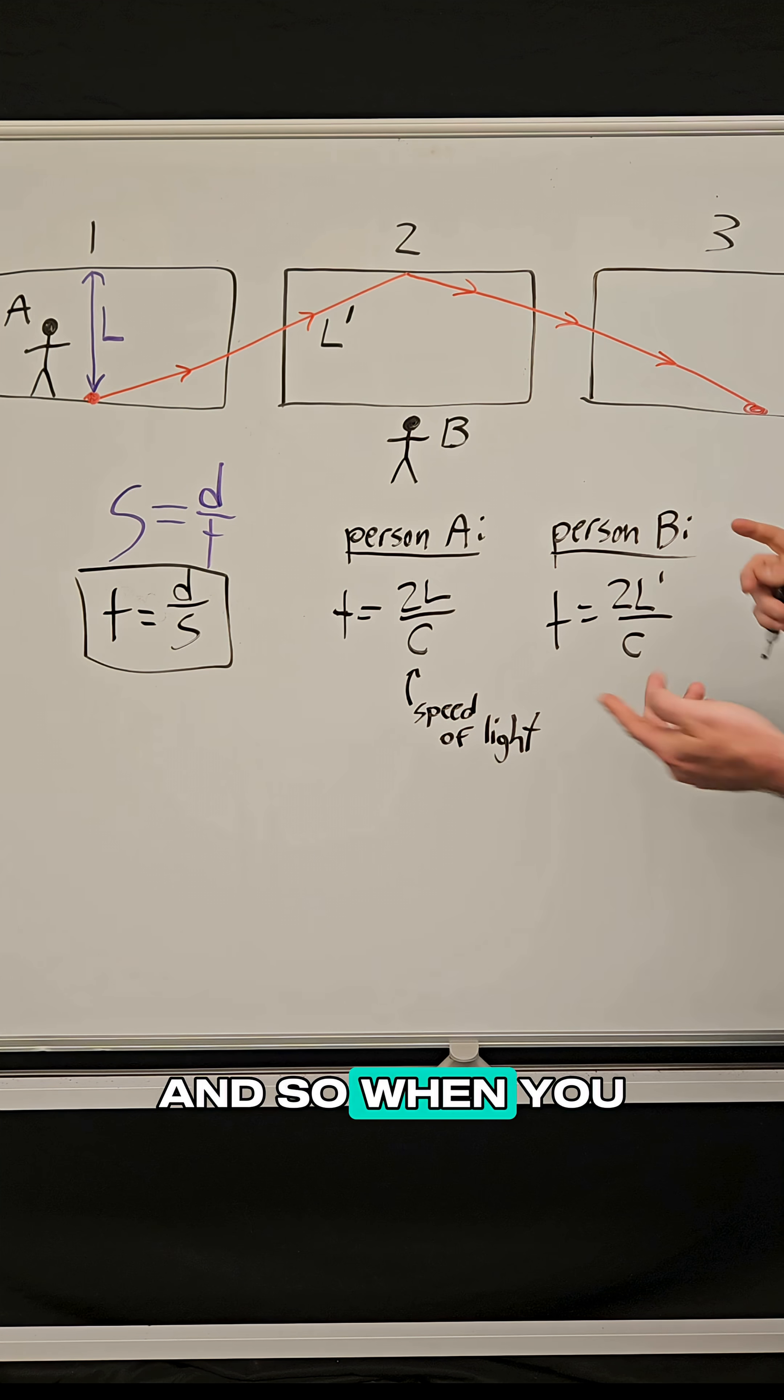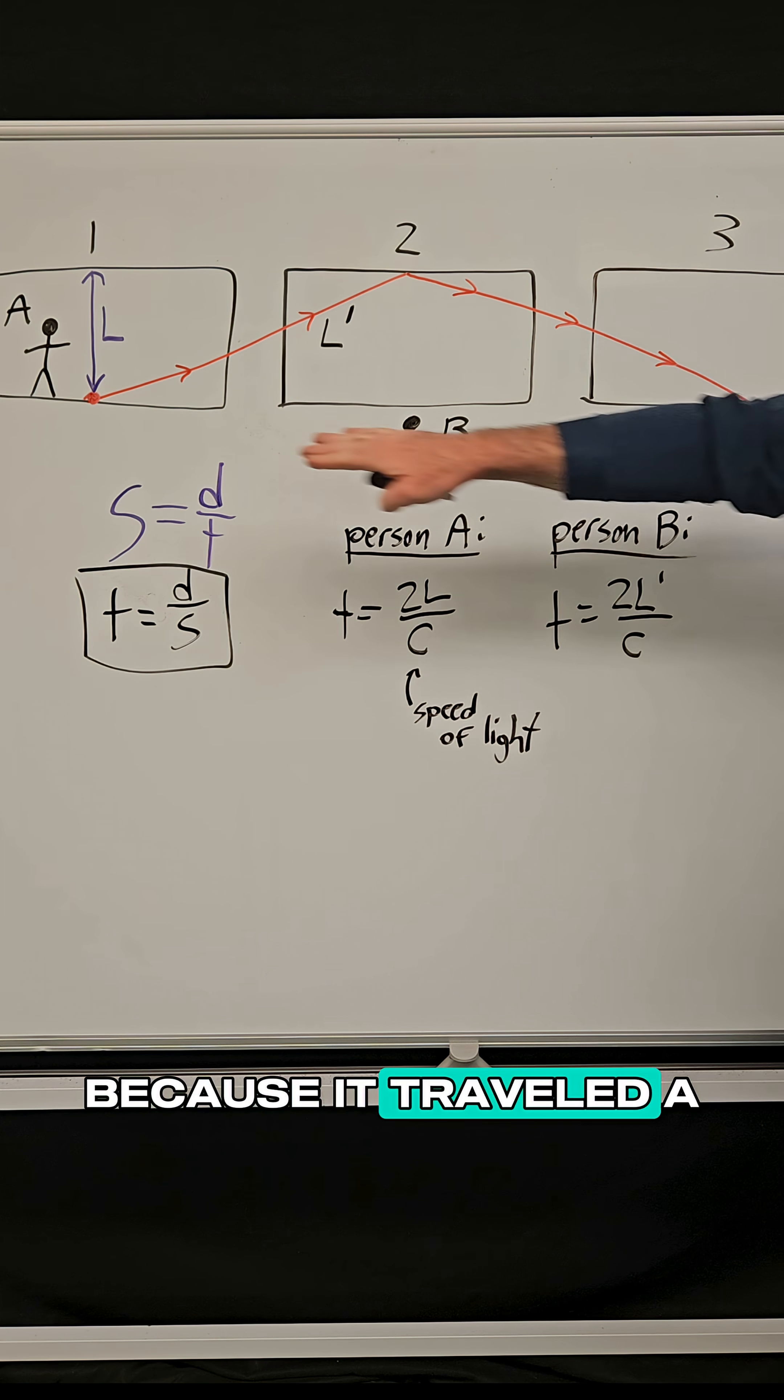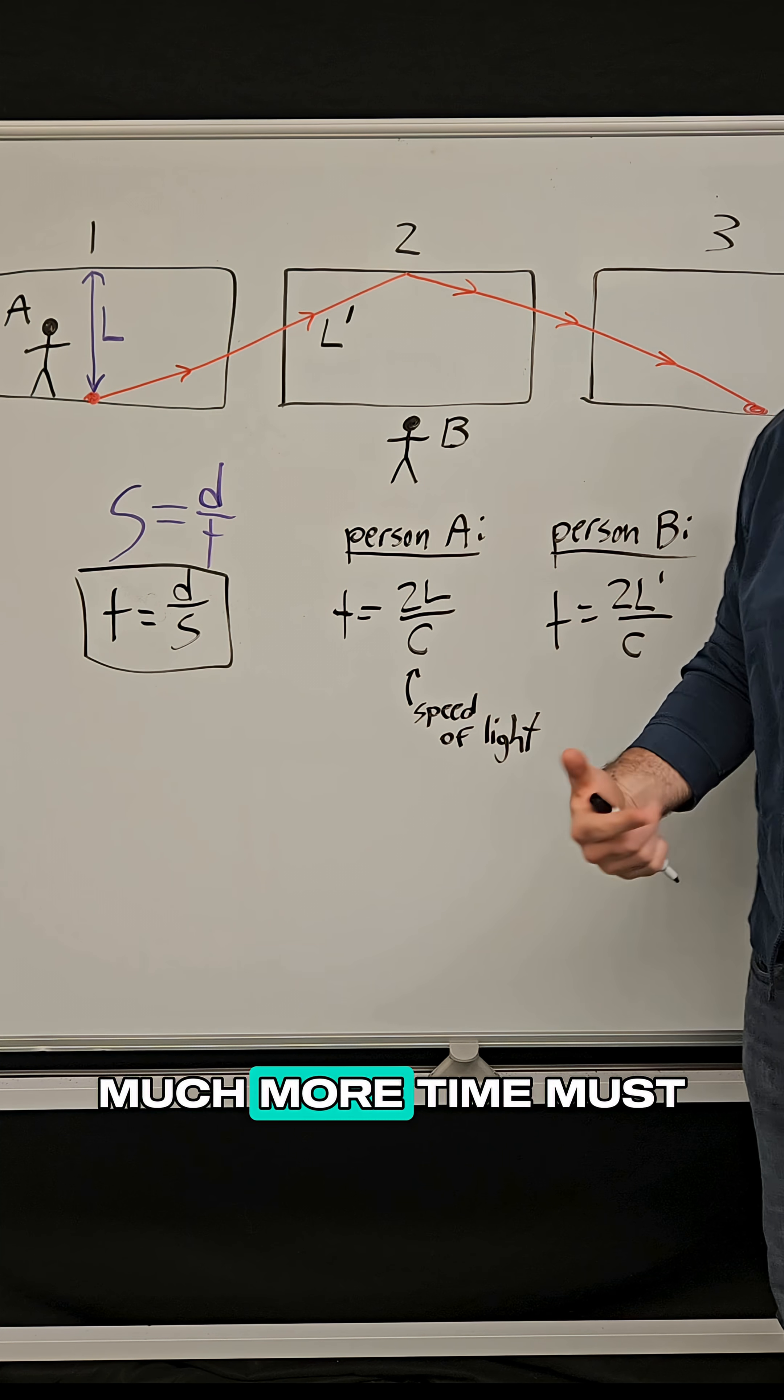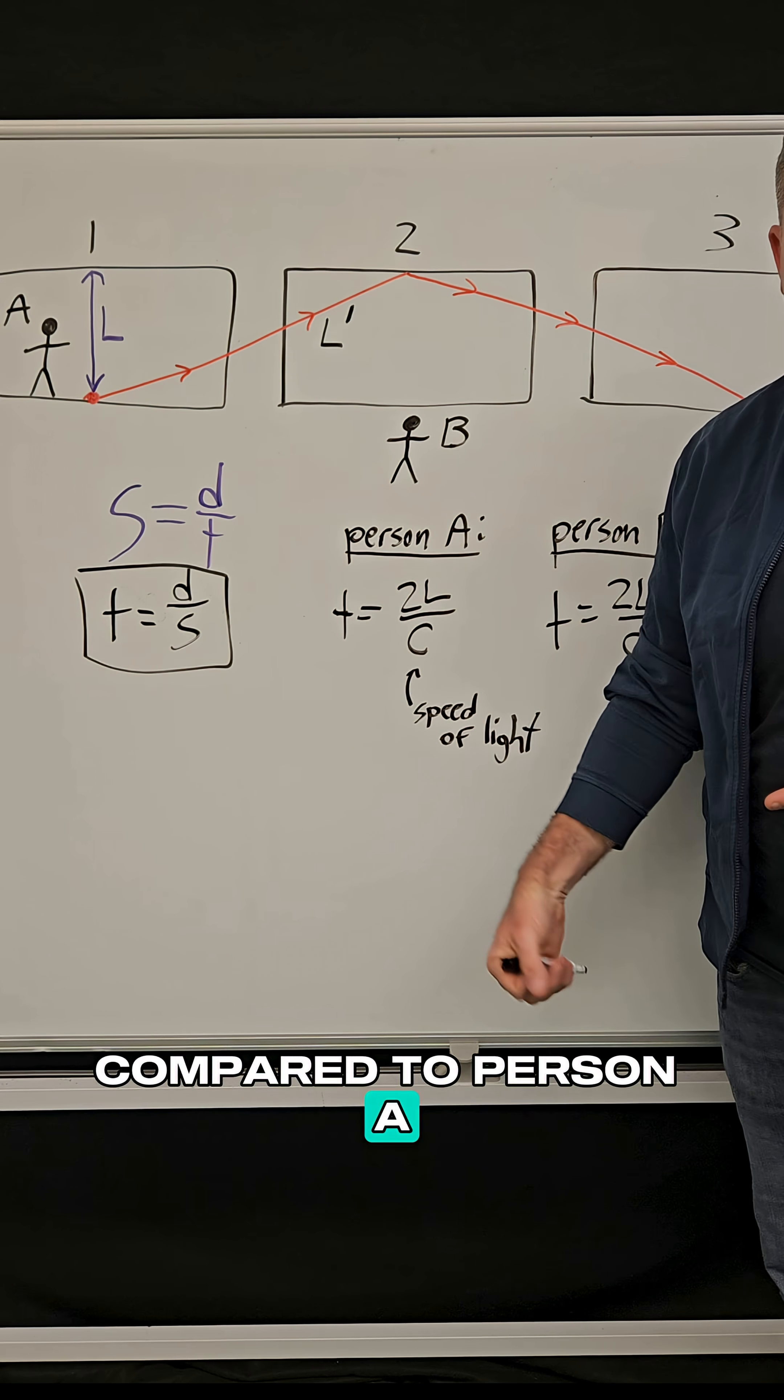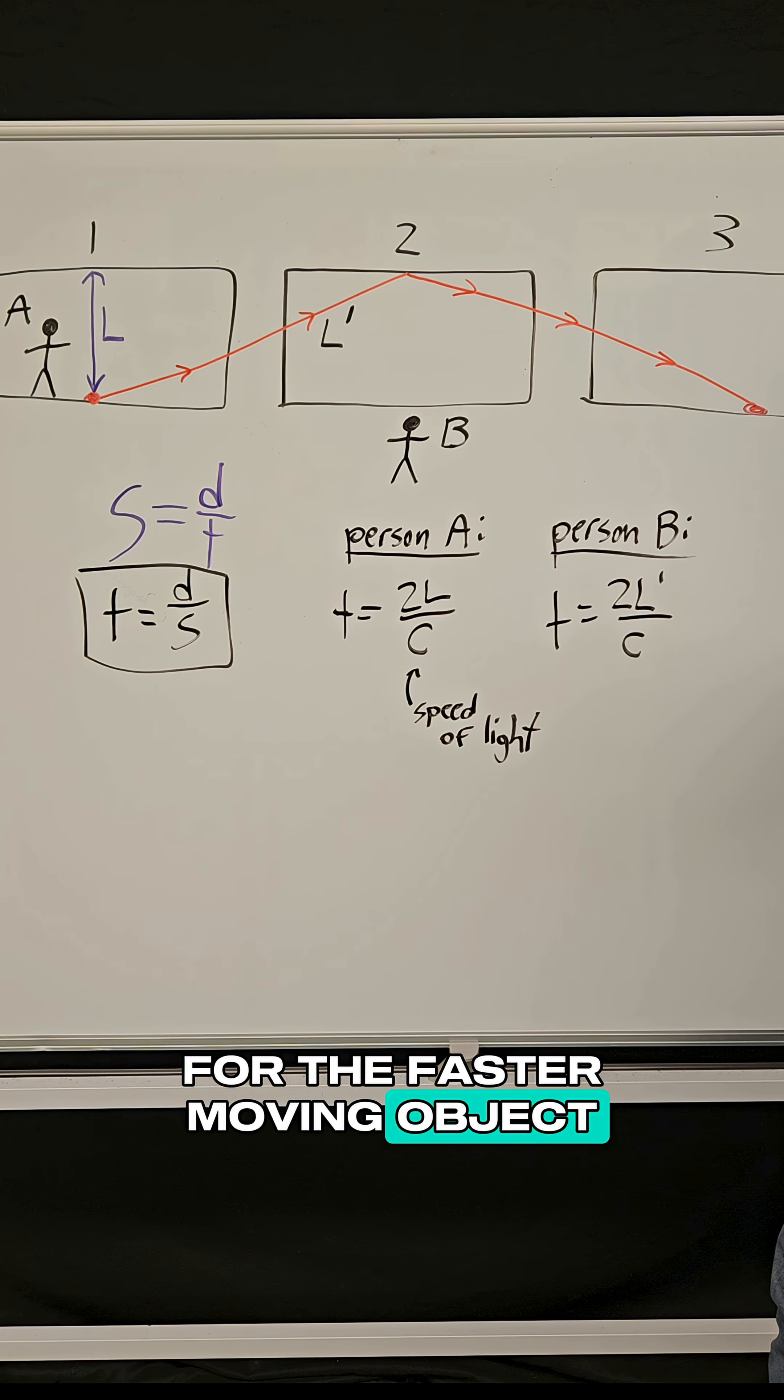And so when you look at the time that went by for person A versus person B, it's very clear that for person B, because it traveled a much greater distance at the same speed, much more time must have gone by for that person compared to person A. Which means that time actually slowed down for the faster moving object.